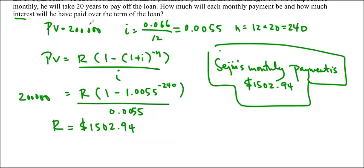And then it asks us how much interest he will have had to pay. Interest is equal to the amount in the end minus the present value or the original loan. In this case, A is actually equal to 1502.94 times 240, because that is the amount he has paid out in the end. So this is the total money he pays out, which ends up being $360,706.60.